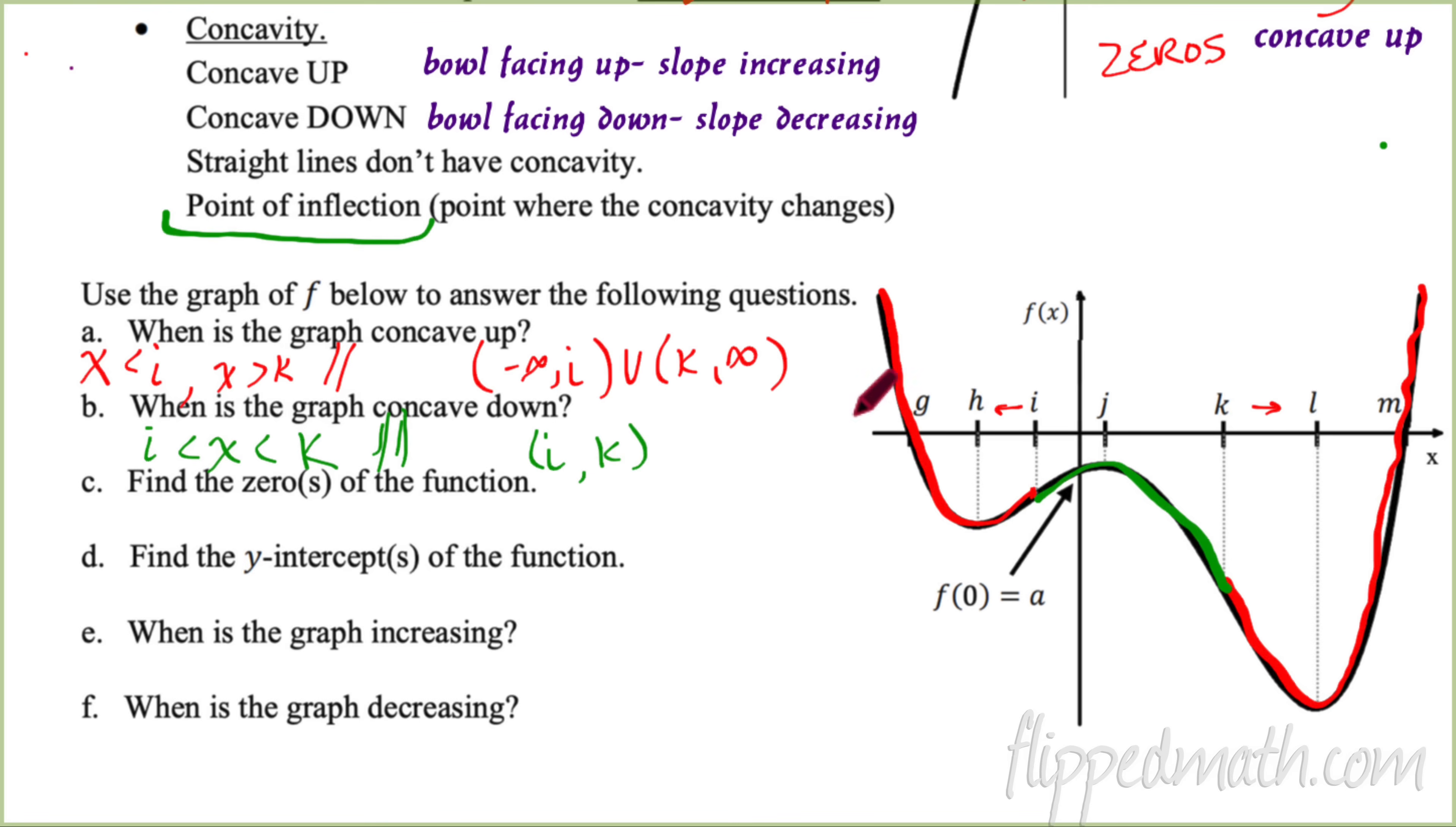Part C, find the zeros. Well, the zeros are where the Y value is zero. The output has to be zero. So we're looking at G. So X has to equal G. And then this value here, which is M. So X would equal M. All right. Find the Y intercepts of the function. Well, that's where X equals zero. That's right here. We're kind of telling you in the graph that this value is A. This is kind of weird. So we would just write Y equals A. The Y value would be A there. It's negative something, but it's the value of whatever A is.